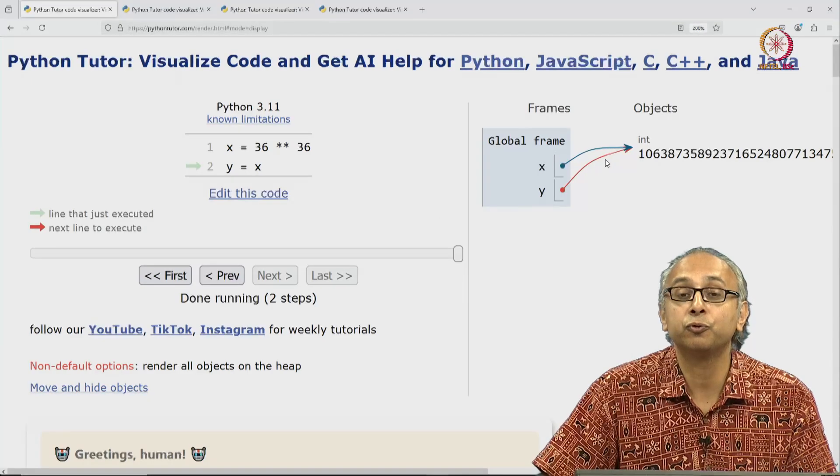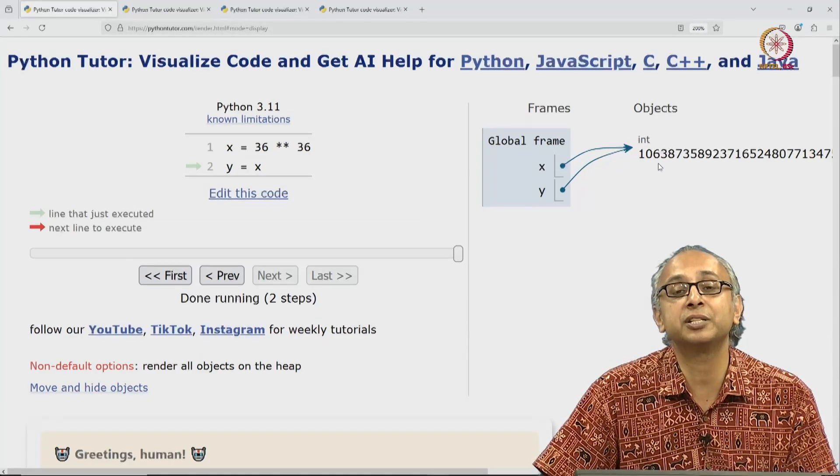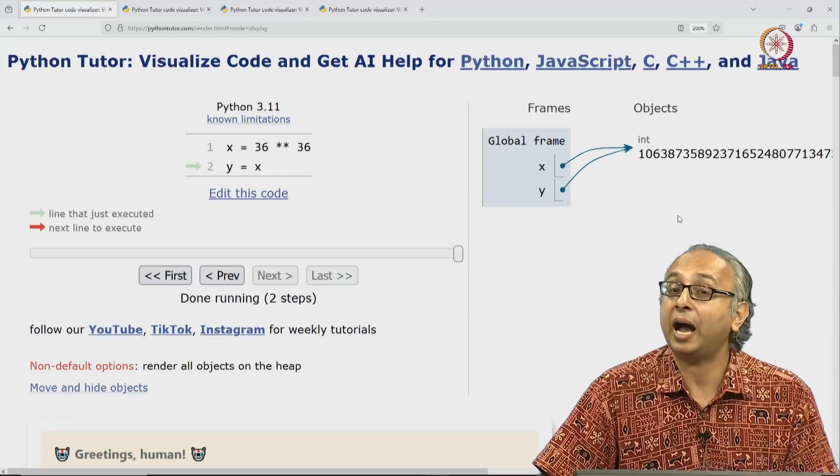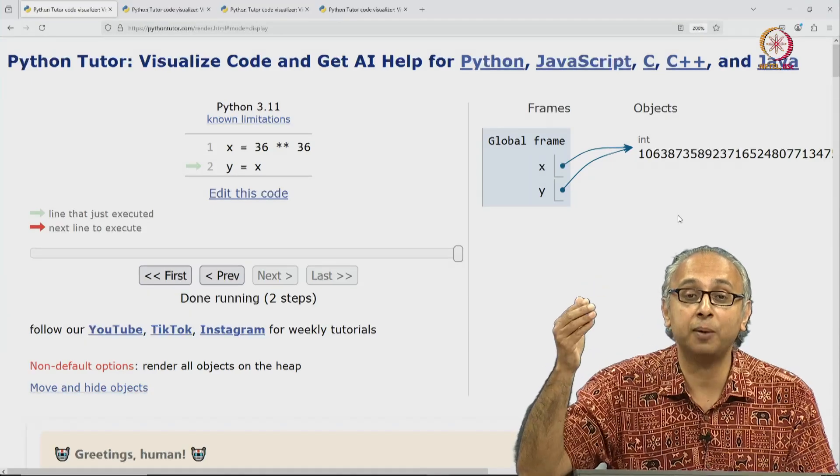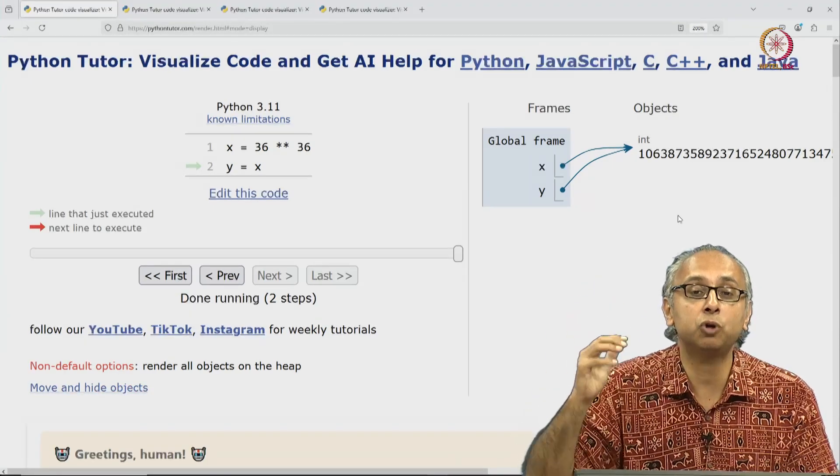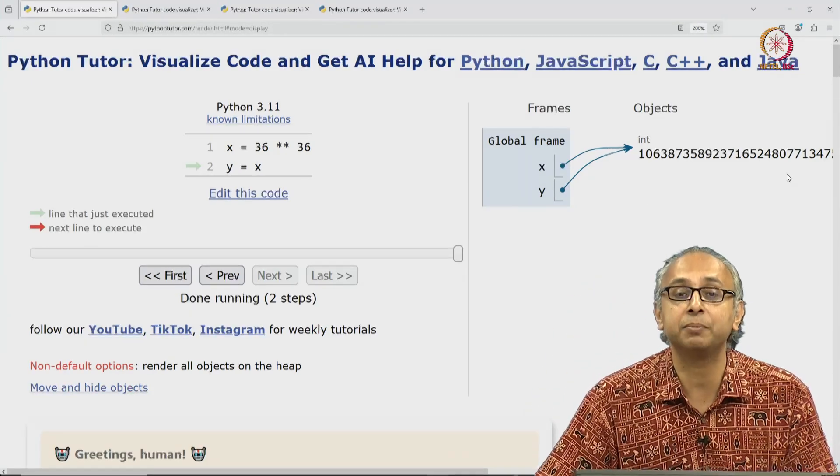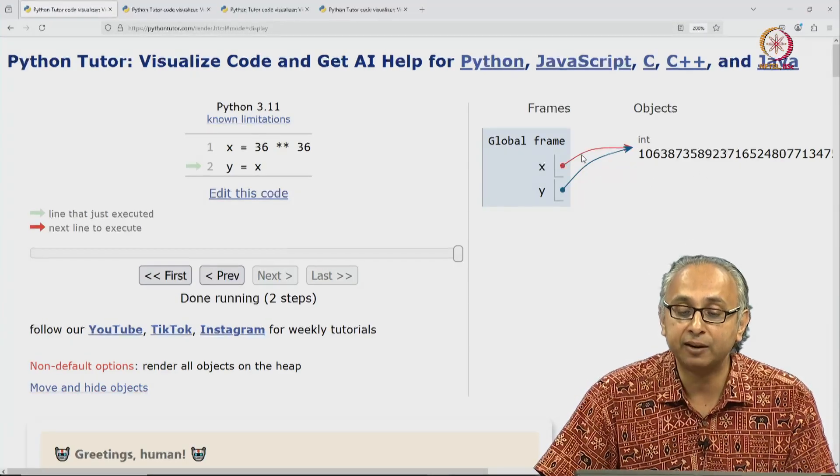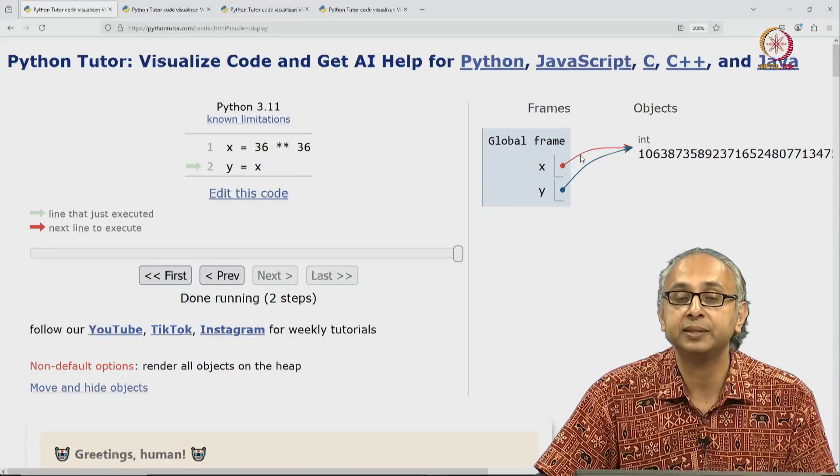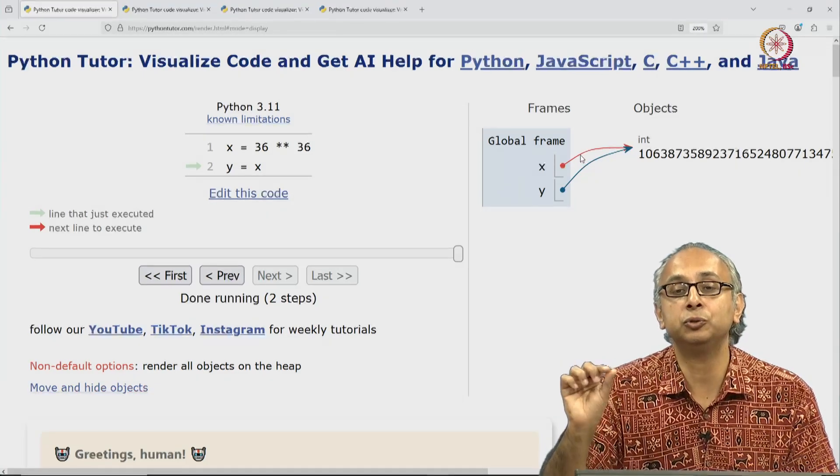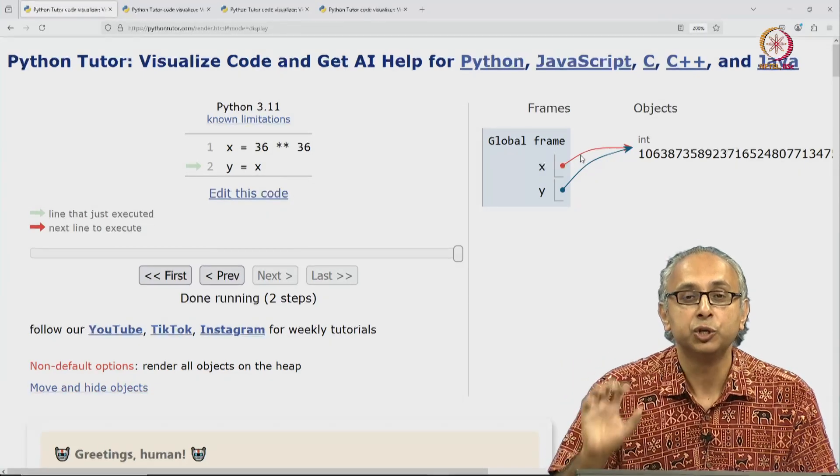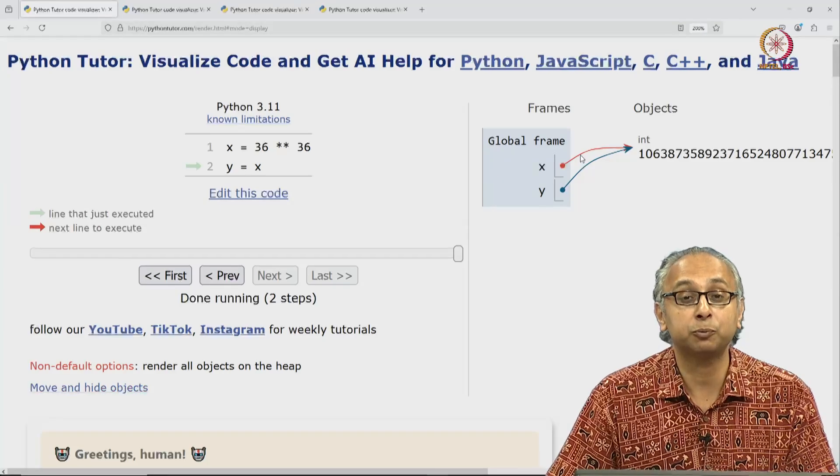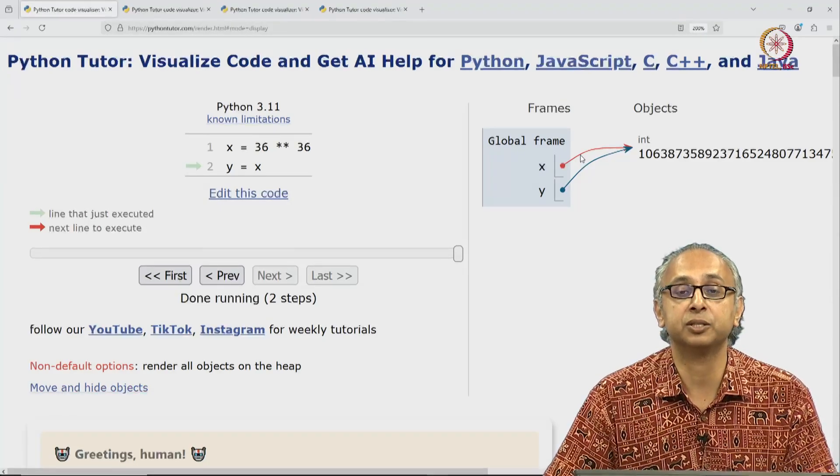I get two variables attached to the same object. I don't copy this object. I don't have two copies of this giant number in my memory. I have only a single integer object and I have two variables that are both attached to that object. So this is the correct way of visualizing this piece of code.